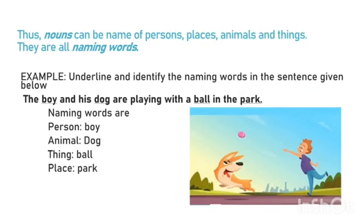Let's underline and identify the naming words in the sentence given below: 'The boy and his dog are playing with a ball in the park.' Let's first underline the naming words: boy, dog, ball, park. Now let's identify the naming words.